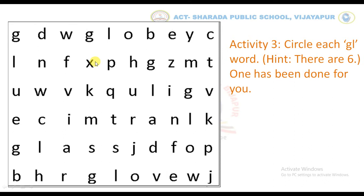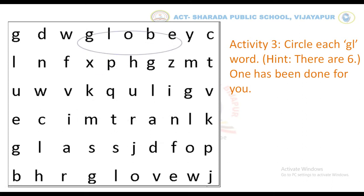So kids, let us see a few examples. Children, find the word which begins with the GL sound. Yes kids, we can see here — GL. Now circle it, like this.